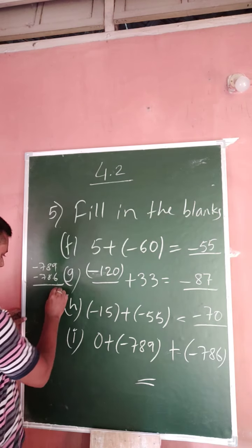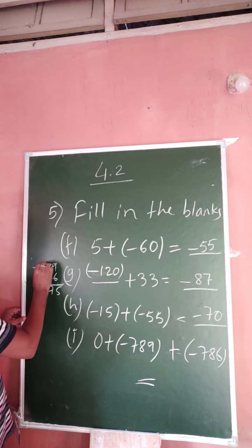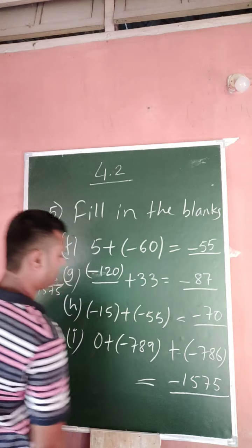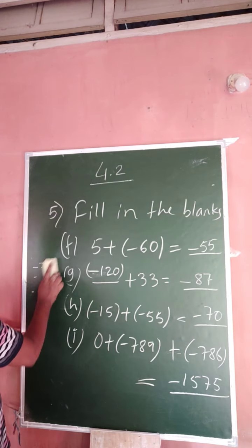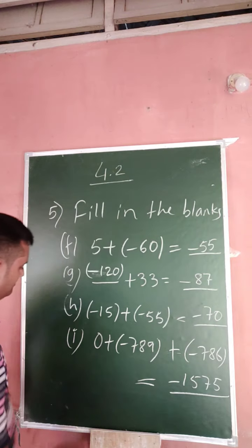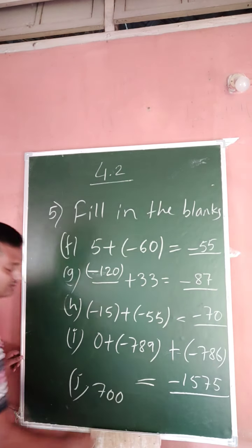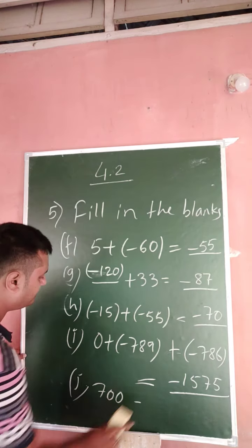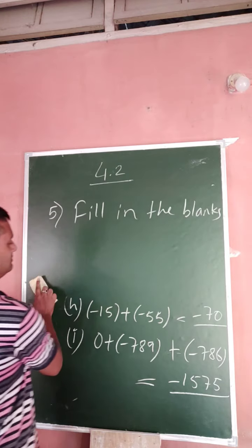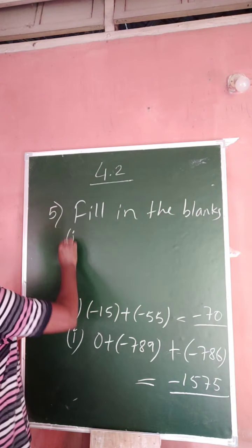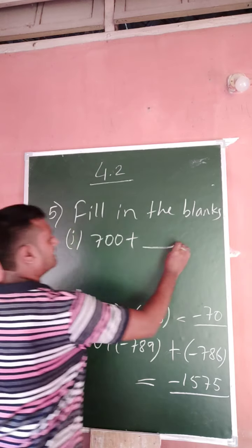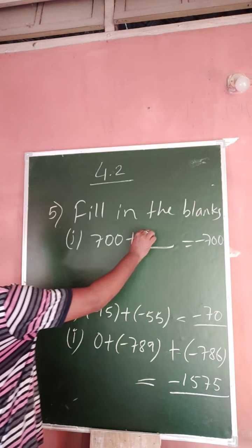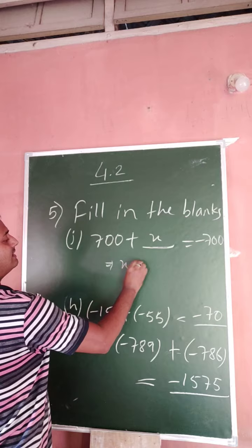This is negative, so minus 1575. So the last one J: 700 plus this. I will show this in here. J: 700 plus dash equal to minus 700. So simple, if this one is X, you just take this 700 to that side.